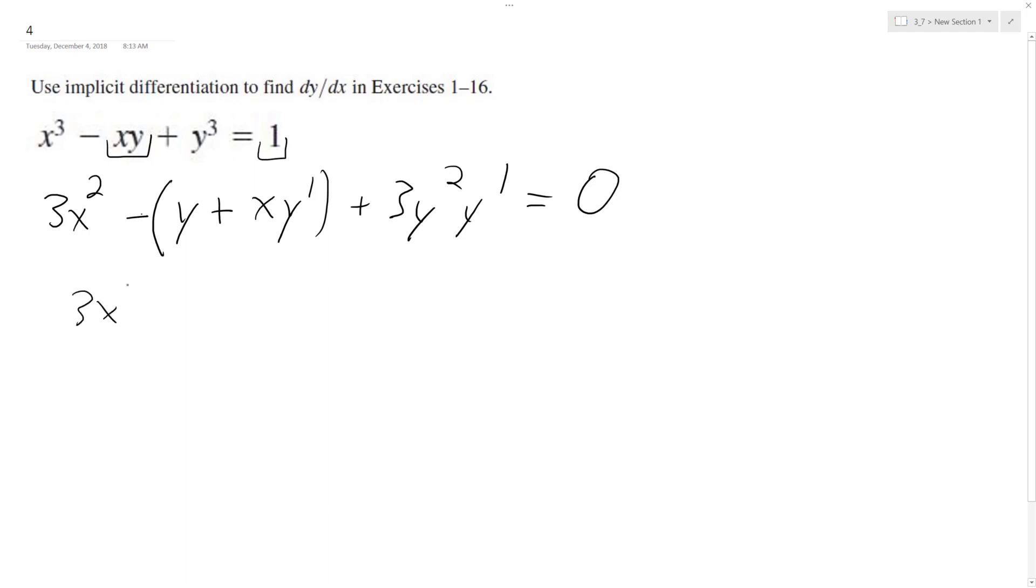Alright, so we get 3x squared minus y minus xy prime, plus 3y squared y prime equals 0.